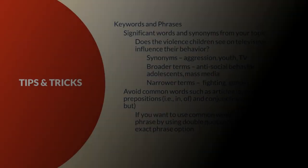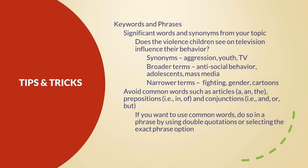Here are some tips and tricks to use while searching. Think about significant words and synonyms from your topic. If your research topic were 'does the violence children see on television influence their behavior,' you could search using synonyms like aggression, youth, and TV; broader terms like antisocial behavior, adolescence, and mass media; or narrower terms like fighting, gender, and cartoons.